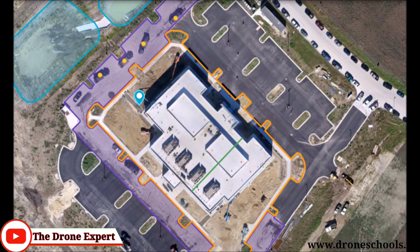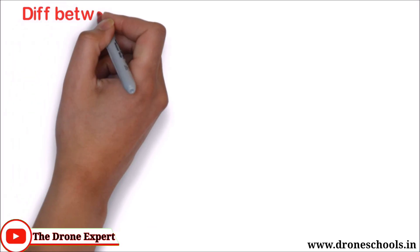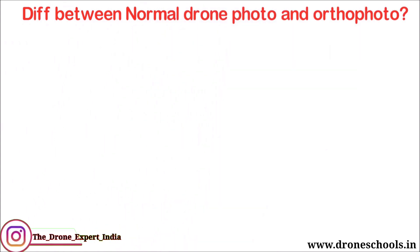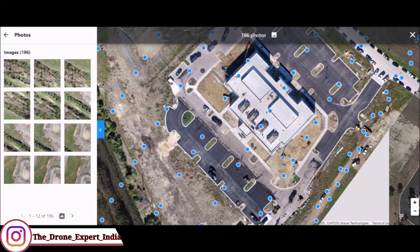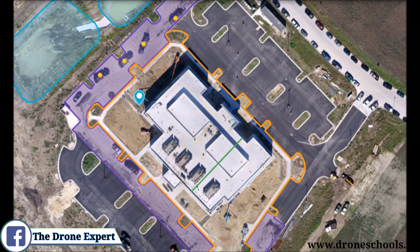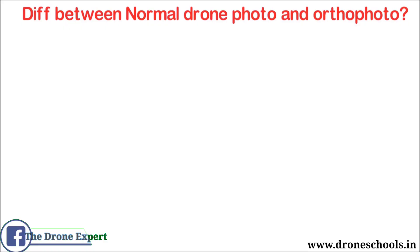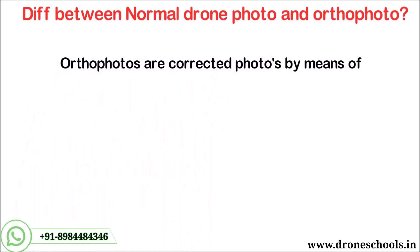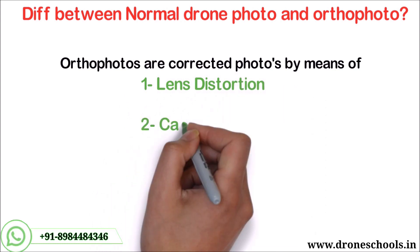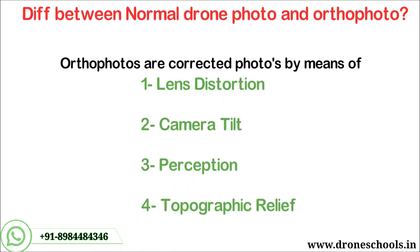An important thing to notice is that there are some differences between a normal photo and an ortho photo. The key difference is perspective and accuracy. During the stitching process, normal images are corrected for lens distortion, camera tilt, perspective, and topographic relief — this process is called orthorectification.